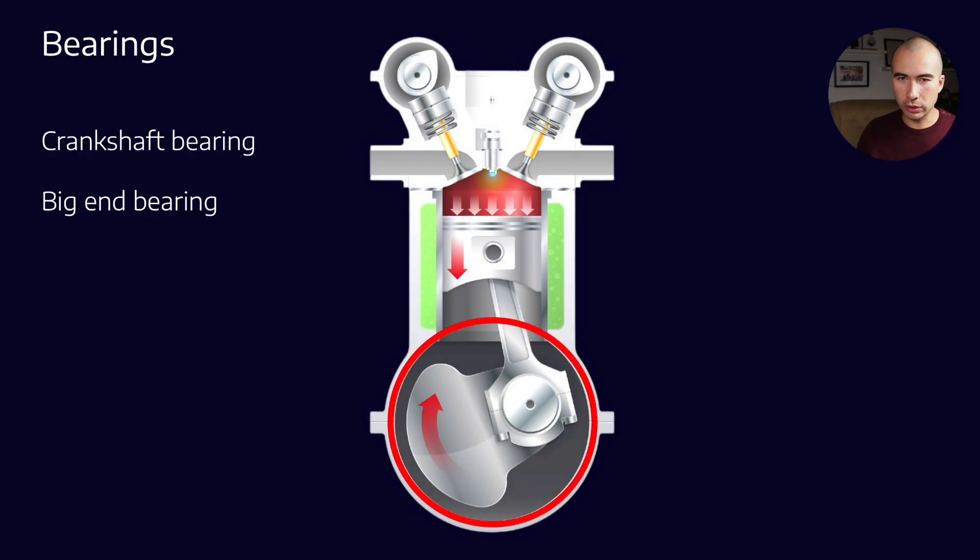First, let's look in the crankcase. You've obviously got the crankshaft bearing, the big end bearing, the little end bearing, but within an engine there's also a couple of other bearings. So as an example, the camshaft.